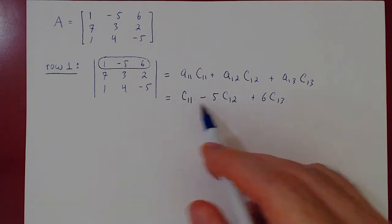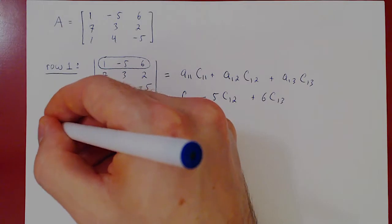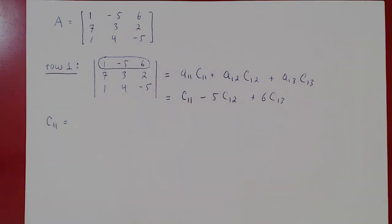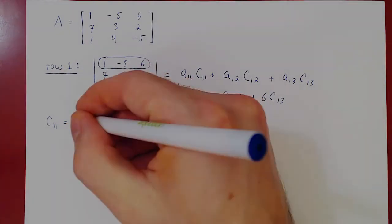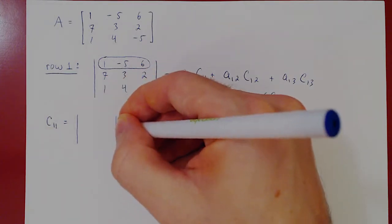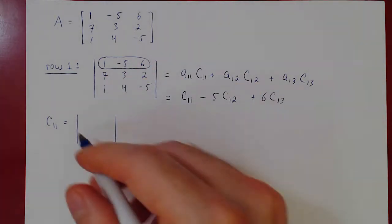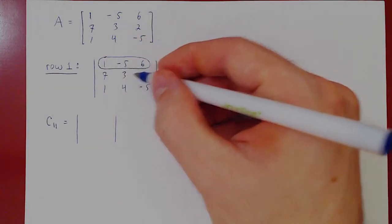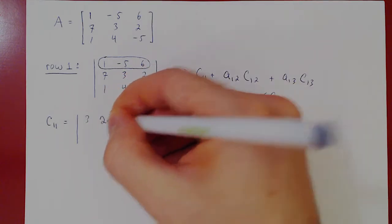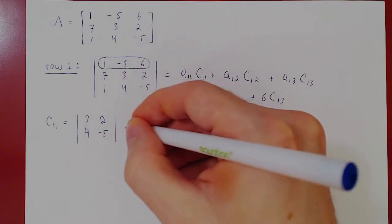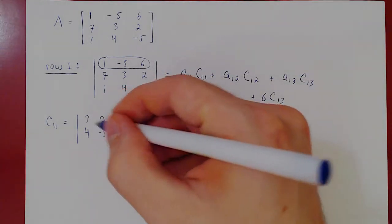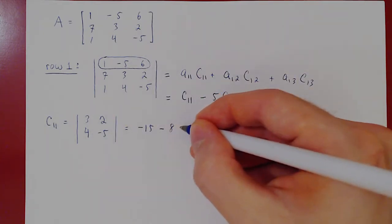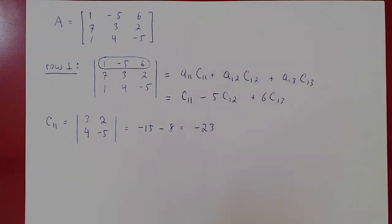For C_11: negative 1 to the 1 plus 1 is positive 1. The cofactor is 1 times M_11 — the determinant after deleting row 1 and column 1 — leaving the matrix 3, 2, 4, negative 5. The determinant is 3 times negative 5 minus 4 times 2: negative 15 minus 8 equals negative 23. So C_11 equals negative 23.